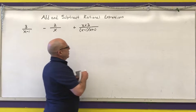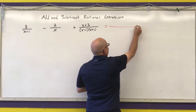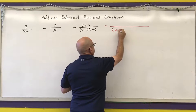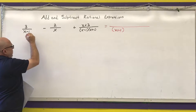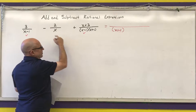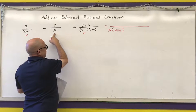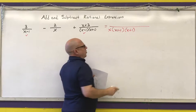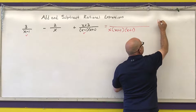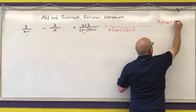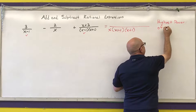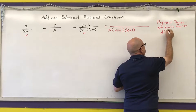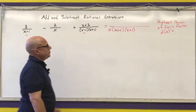I have (x minus 1), and the highest power that (x minus 1) appears in any of the denominators is to the first power — that takes care of both occurrences. Then I have an x to the first power, and then (x plus 1). To find the LCD, you want the highest power of each factor appearing in your denominator polynomials.